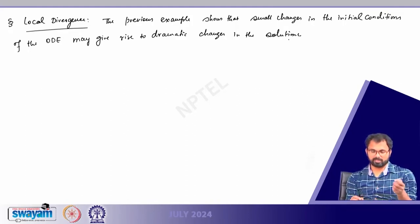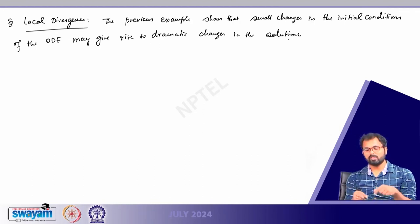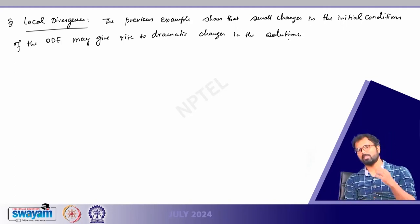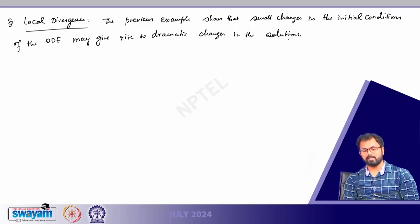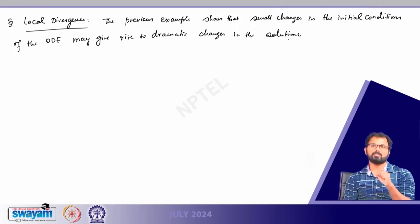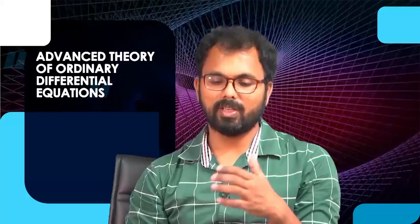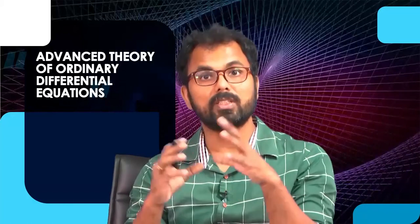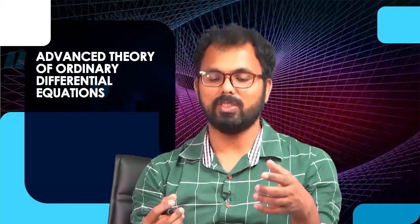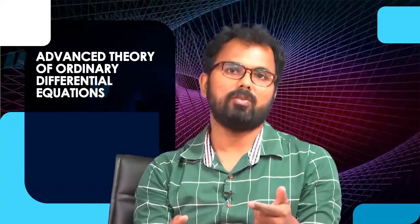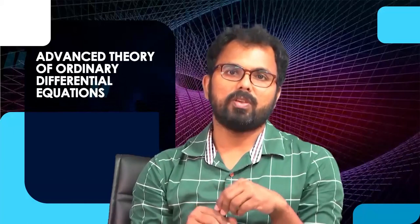I am running out of time in this lecture, so I will start with the formal definition of local divergence in the next class. I will give one or two more examples of chaotic systems from a dynamical systems point of view and try to understand how chaotic theory can be visualized in the context of ODEs. I will stop here today and see you in the next class.